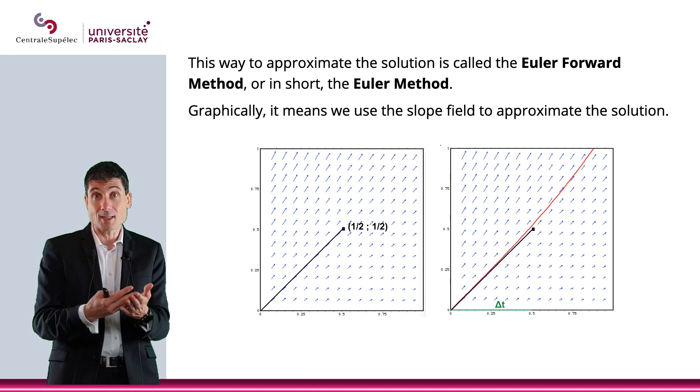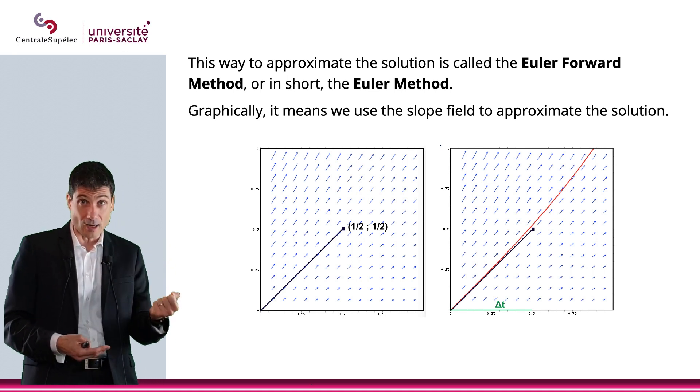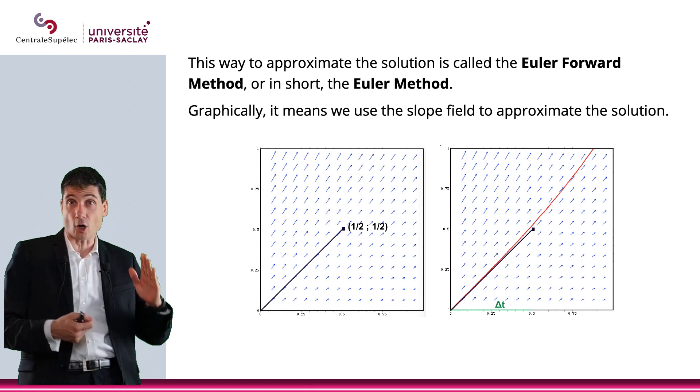Therefore, Y prime at T0 is F of T0, Y of T0, which is basically Y0. So, you can compute the slope of your tangent at T0. So, what do you know at T0? You know two things. You know Y of T0, that's Y0, but you also know the slope at that point. So, you know how you start.